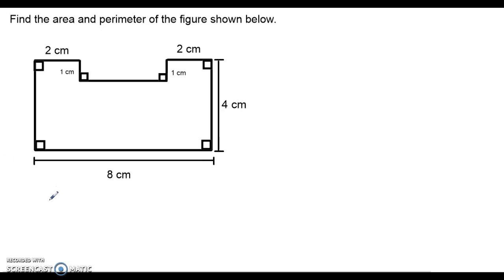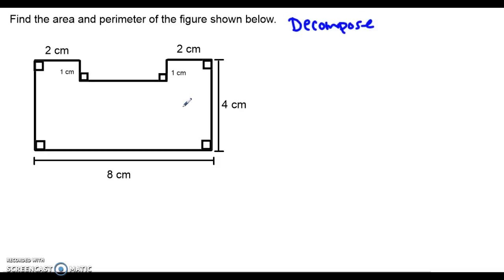Let's find the area and perimeter of the figure shown below. This figure is different from the ones we've worked with so far because there is no direct area formula for it. Instead, we have to use a different strategy to determine how many square units can fit inside of this irregular shape. One strategy is to decompose or break the figure up into smaller shapes that we do know how to find the area of.